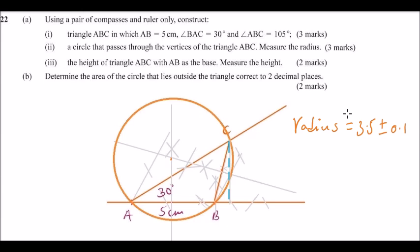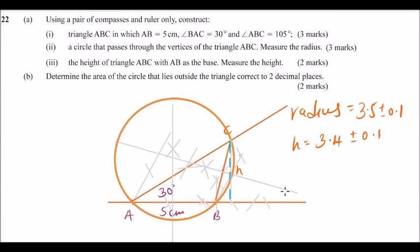Then we are told to find the height of triangle ABC with AB as the base and measure the height. So from C, you make two marks on line AB, and using those two marks you make two more marks from each intersection point. Then you join them to come up with a perpendicular from C to AB. You measure that perpendicular. We now have the radius and we have the height.